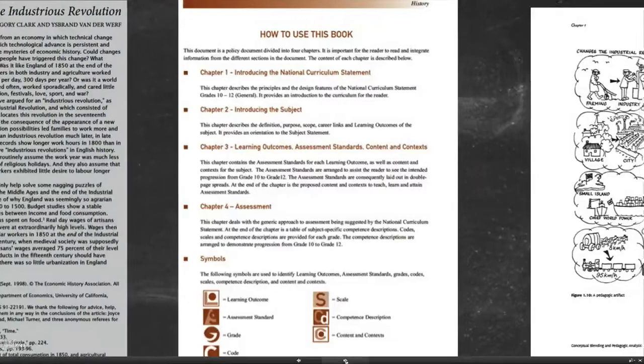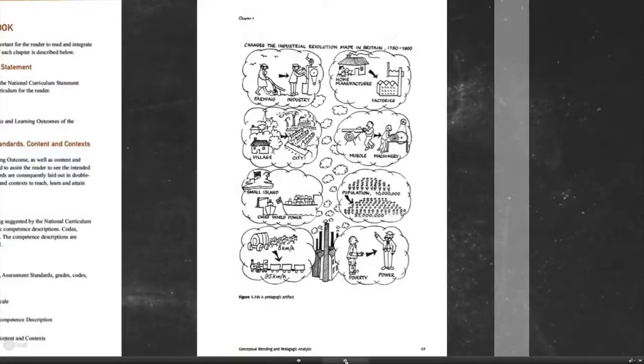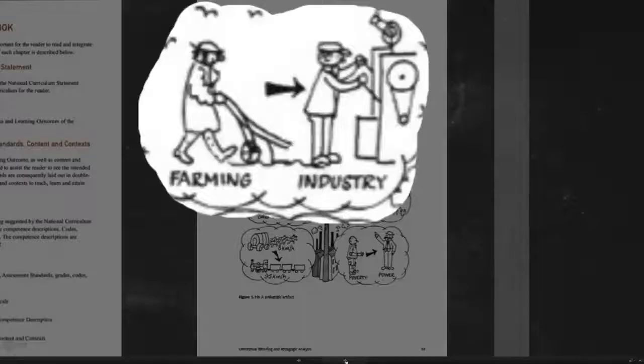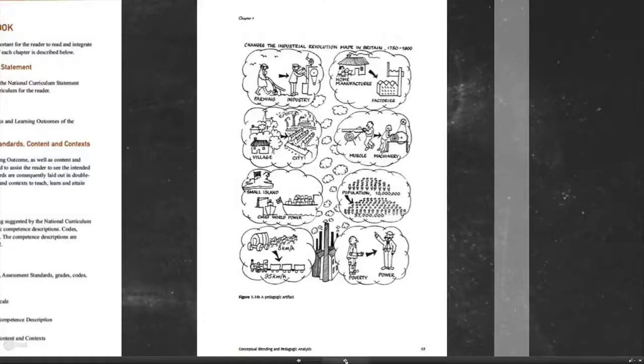Now a teacher at the third level gets hold of the curriculum statement and then transforms it into something which can be taught and learned. Notice how radically different this is from that journal article which we showed earlier. Over here everything is simplified, everything is told in very clear but iconic terms. The industrial revolution, the farmers are reduced to one person farming, industries reduced to one person in industry. The all the changes are caught in eight little bubbles all of which have an amazingly simplified account.